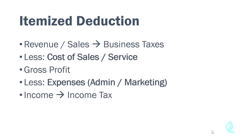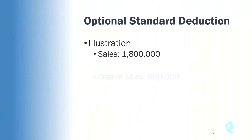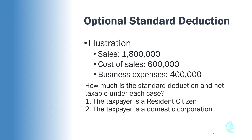This is how you report itemized deductions, and in comparison, this is how you report optional standard deductions. If you notice, there is only one line item for expenses or deductions, and you immediately compute your taxable income. An important additional note: when using the optional standard deduction, you no longer need to present proof of your expenses — that's a big plus for a lot of entrepreneurs. In the next video, we'll tackle an illustration showing the application of optional standard deductions.